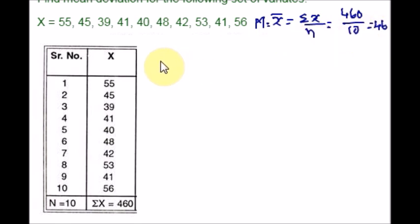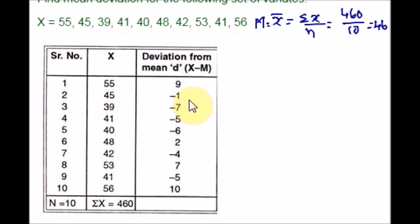Now, let's find the deviation from mean. x minus m. You have to subtract the mean from these numbers one by one. So, 55 minus 46 would be 9. 45 minus mean 46 would be negative 1. 39 minus 46 would be negative 7. So, like that, you have to create one more column. Hope you are getting the same values. You can double check it.